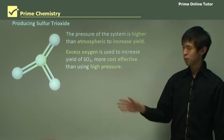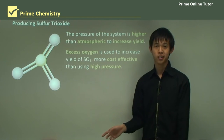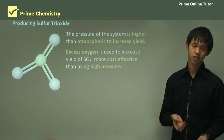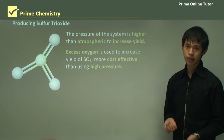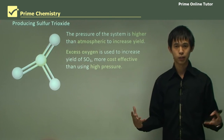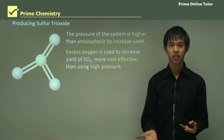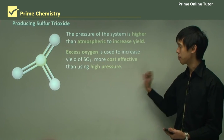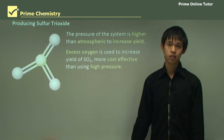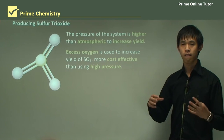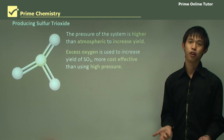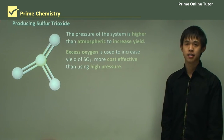Often using excess oxygen is more cost-effective than using higher pressure. We can easily introduce more oxygen into the stream, whereas building a container strong enough to withstand high pressure is much more expensive. So we tend to focus on increasing excess oxygen simply to limit the costs incurred in producing sulfuric acid.